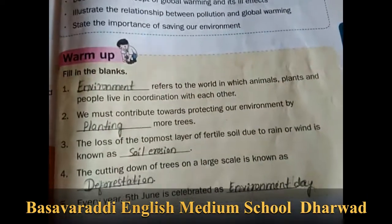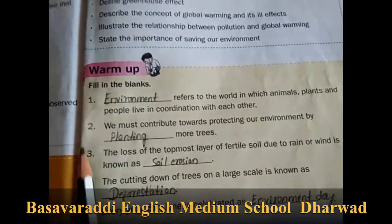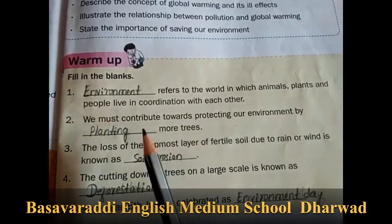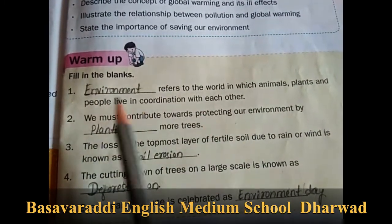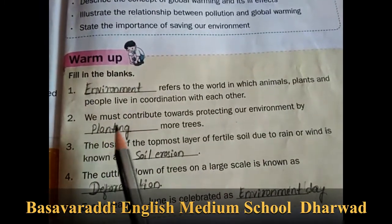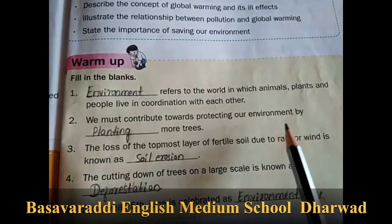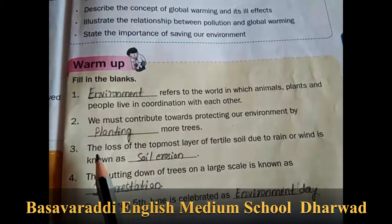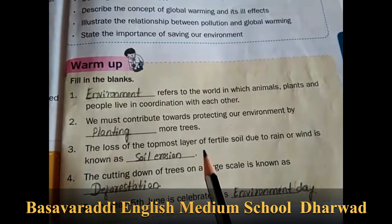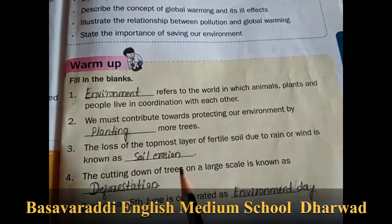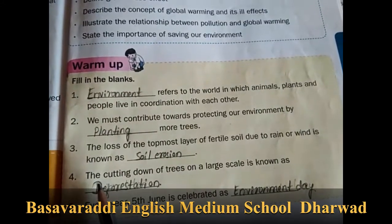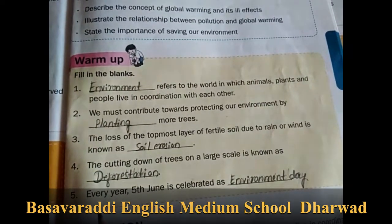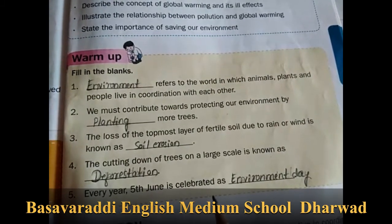First we have to do the warm-up activity. Fill in the blanks. The blank refers to the world in which animals, plants and people live in coordination with each other — answer is 'environment'. Second: we must contribute towards protecting our environment by planting more trees. Third: the loss of the topmost layer of fertile soil due to rain or wind is known as 'soil erosion'. Fourth: the cutting down of trees on a large scale is known as 'deforestation'. Fifth: every year, 5th June is celebrated as Environment Day.